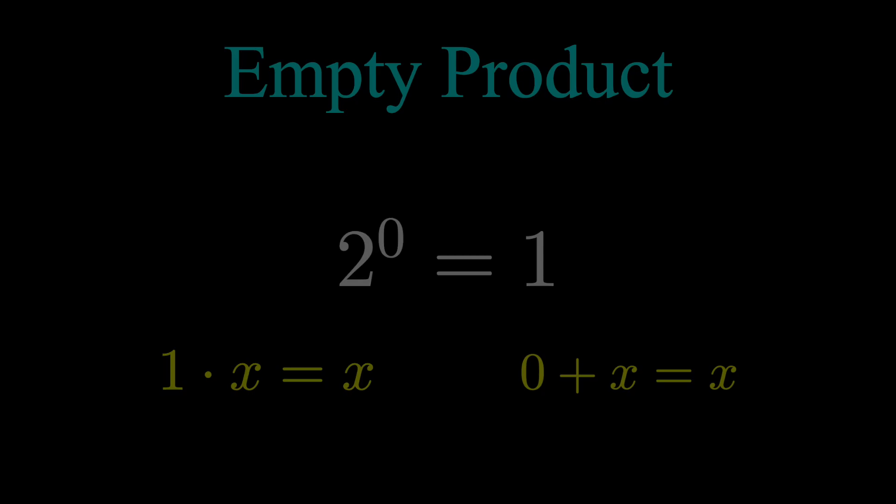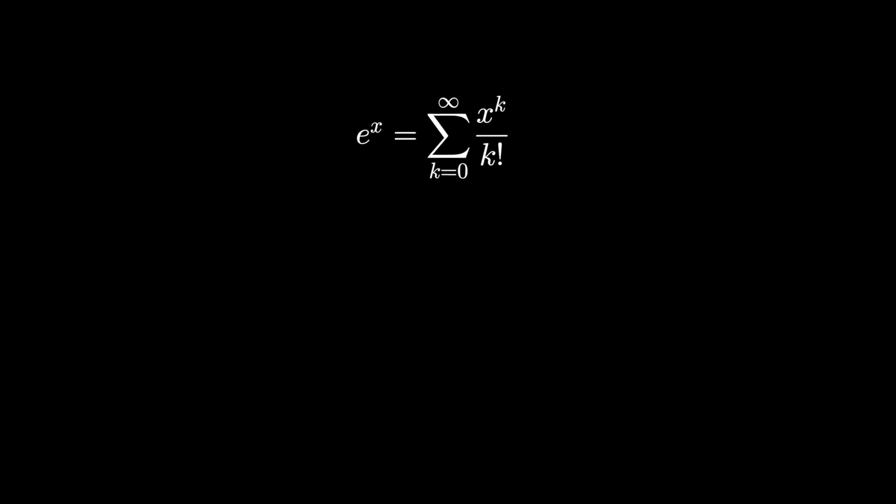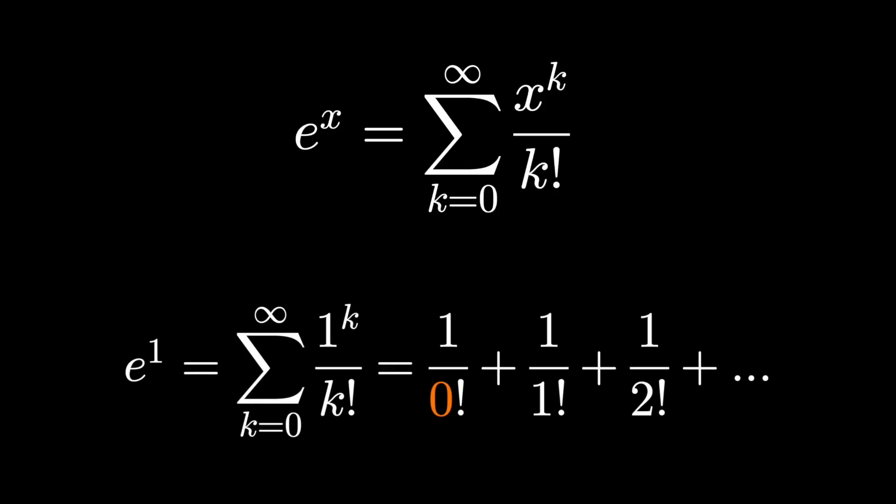Of course, also, there's many formulas and series that rely on 0 factorial to be 1. Take the famous series definition for e to the x. This sum is only going to be true if 0 factorial is 1.